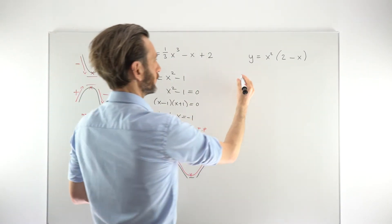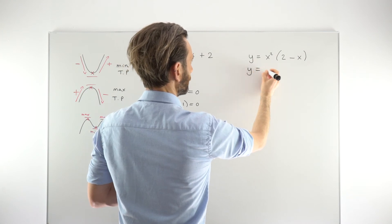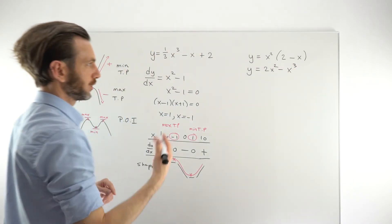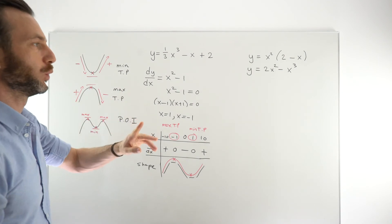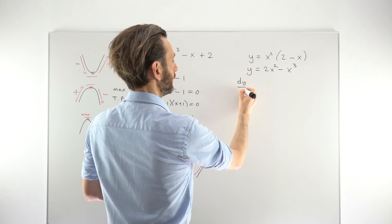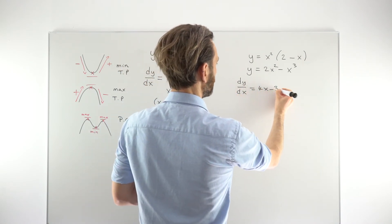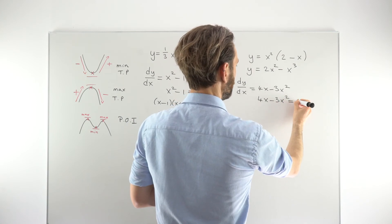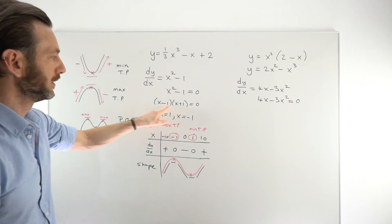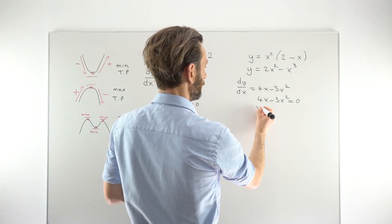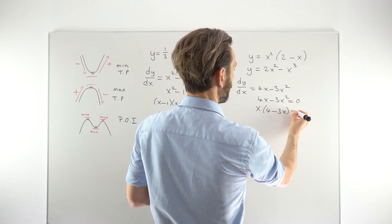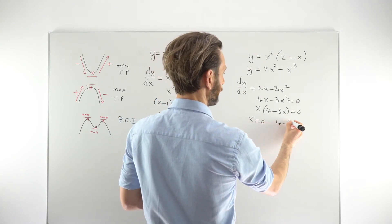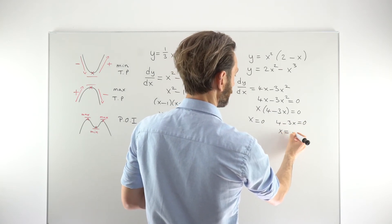Moving to the second example: this is not in a differentiable form, so we start by multiplying out the bracket to get 2x squared minus x cubed — now a cubic. Taking the derivative, dy/dx equals 4x minus 3x squared. Setting that equal to zero for finding the stationary points, we factor out a common factor of x to get x(4 minus 3x) equals 0, giving x equals 0 and x equals 4 over 3.